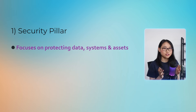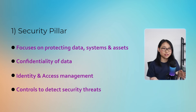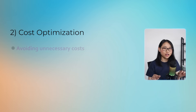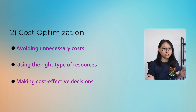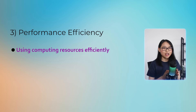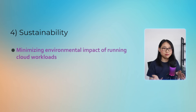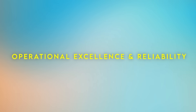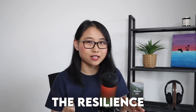The security pillar focuses on protecting your data, systems, and assets. This includes confidentiality of data, identity and access management, as well as establishing controls to detect security threats. The cost optimization pillar is all about avoiding unnecessary cost — using the right types of resources for your workloads and making cost-effective decisions over the long term. Performance efficiency is about using compute resources efficiently to meet system requirements and maintaining that efficiency as demand changes and technologies evolve. The sustainability pillar focuses on minimizing environmental impact whilst running cloud workloads. The remaining two pillars — operational excellence and reliability — are very important because they provide architectural best practices and guidance to improve the resilience of your workloads.